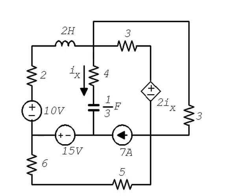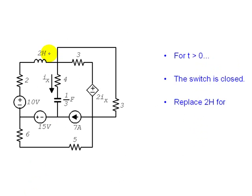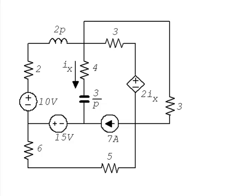For T greater than zero, of course, the switch is closed, and the current source is shorted out of existence. Replace 2H by its impedance, 2P. Replace the capacitance, one-third of a farad, by its impedance, 3 over P.